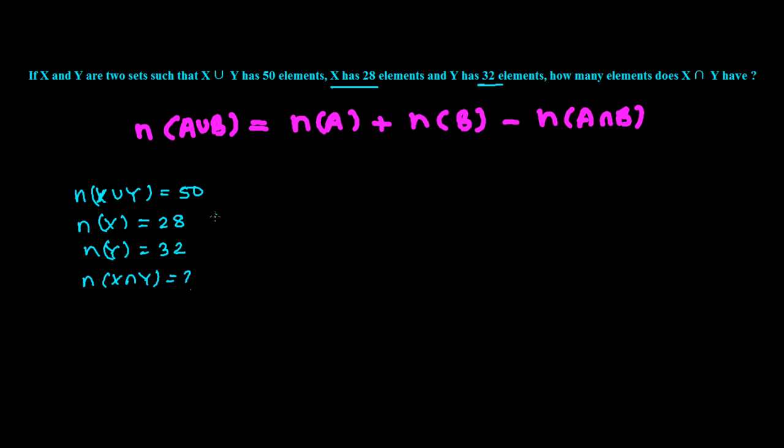This question we can solve with the help of the Venn diagram also, and without using Venn diagram directly by using this formula also. So let's try to solve this by using formula. Since n(X union Y) is actually n(X), total number of elements in set X, plus total number of elements in set Y, minus total number of elements in X intersection Y.